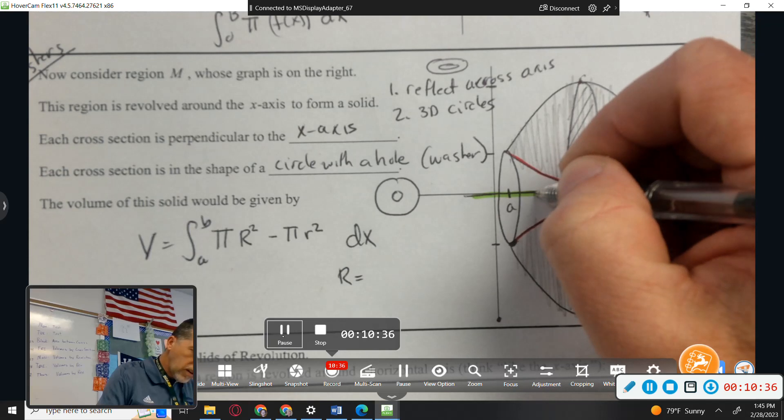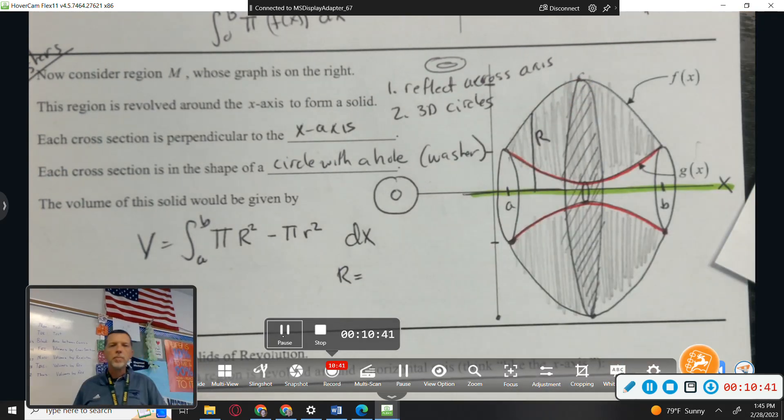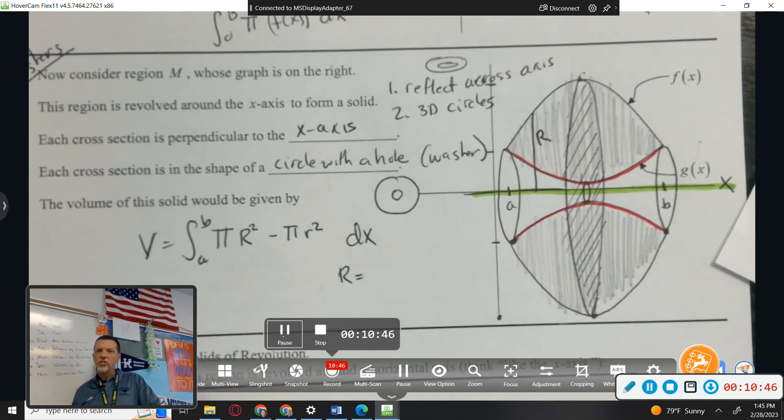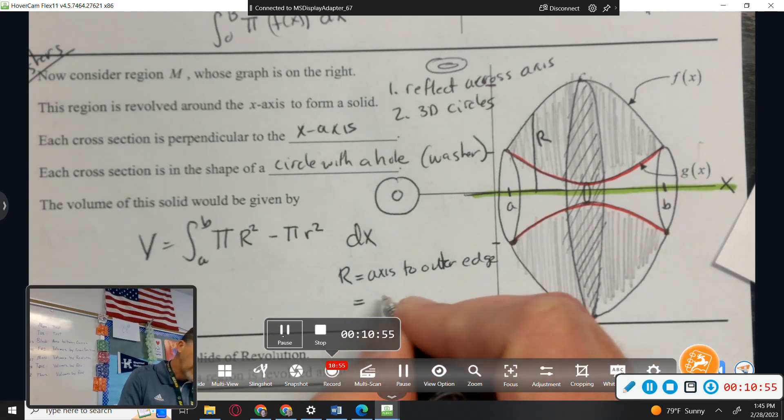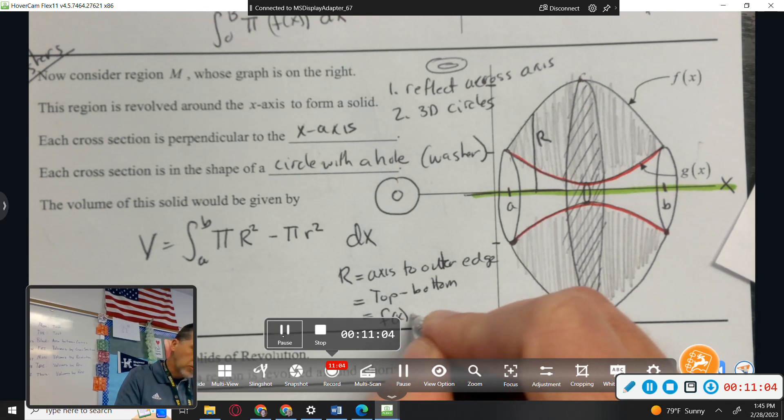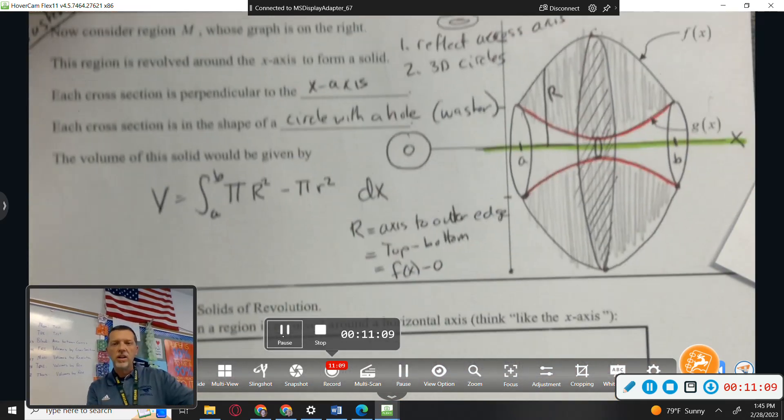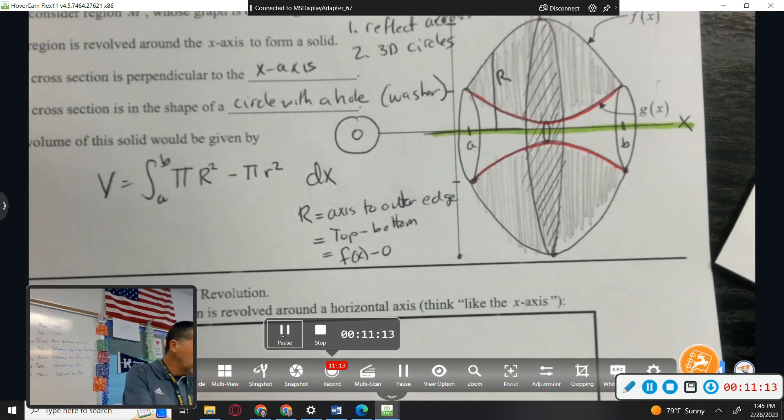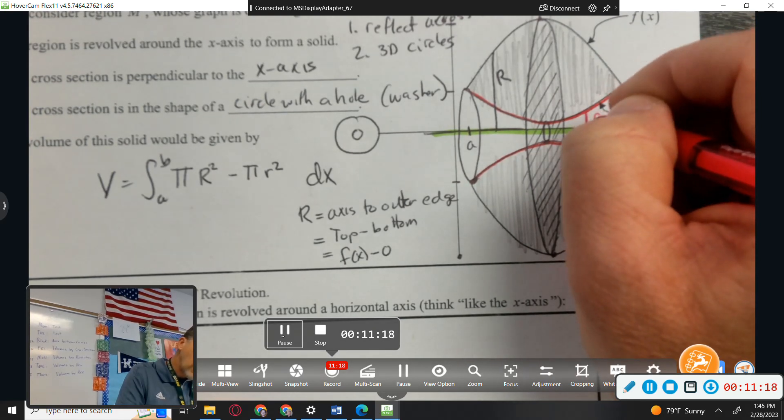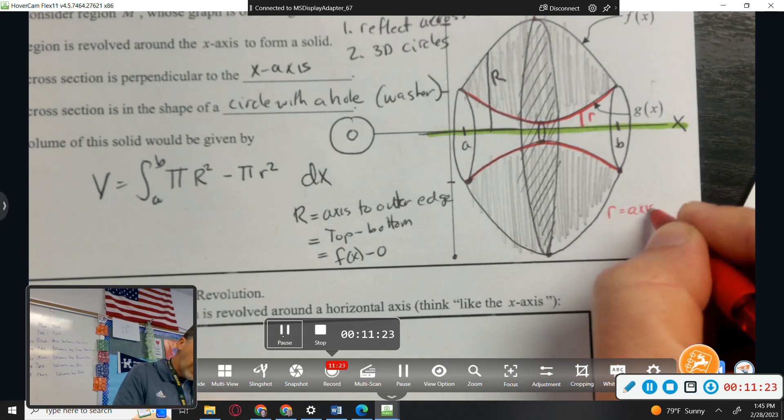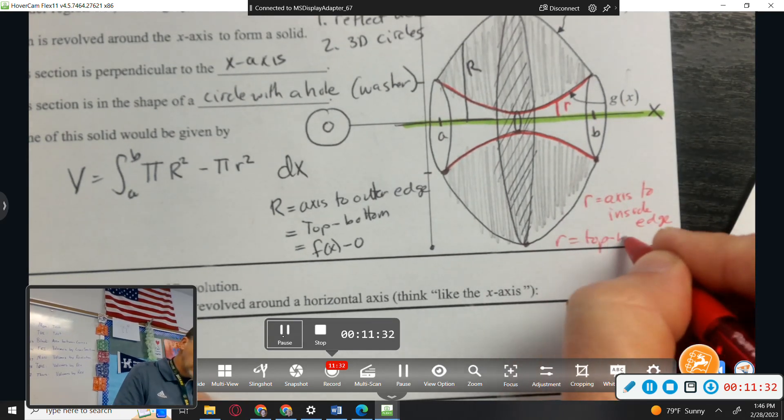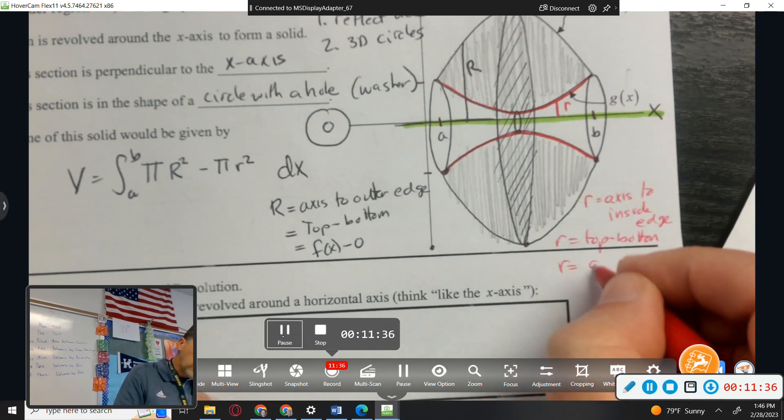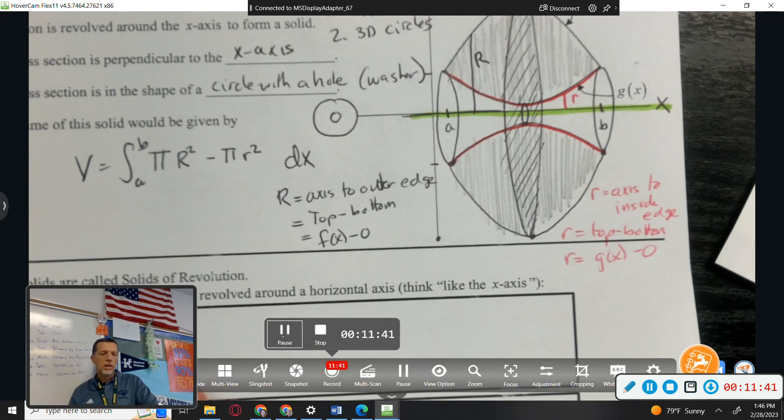Most calculus teachers use capital R and lowercase r. Big R is the outside radius, from the axis to the outer edge. The little r is from axis to inside edge. We can think about top minus bottom. So that's f(x) minus zero for big R. Little r, again, you can do top minus bottom. Top is G and bottom is zero.